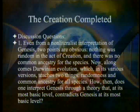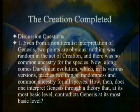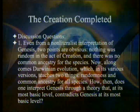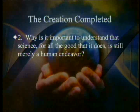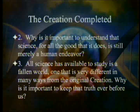Discussion questions: Even from a non-literalist interpretation of Genesis, two points are obvious — nothing was random in the act of creation, and there was no common ancestry for the species. Now along comes Darwinian evolution, which in its various versions teaches two things: randomness and common ancestry for all species. How then does one interpret Genesis through a theory that at its most basic level contradicts Genesis at its most basic level? Why is it important to understand that science, for all the good it does, is still merely a human endeavor? And all science has available to study is a fallen world — one that is very different in many ways from the original creation.